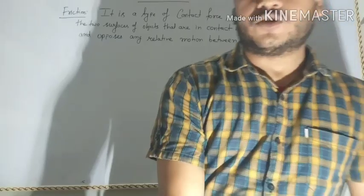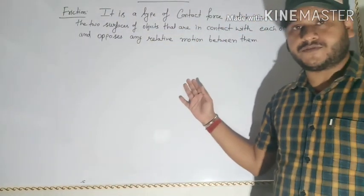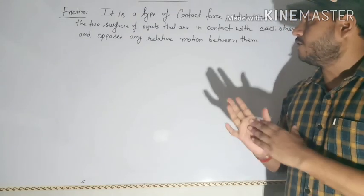The force which opposes the motion of a moving object is called friction. As you have already studied in the previous chapter on Force, there were two types of force: contact force and non-contact force. Frictional force is one type of contact force. Let us now define the frictional force.